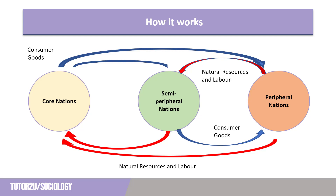So it's win-win for the core nations. Unlike dependency theory, Wallerstein suggested that the semi-peripheral nations were also able to exploit the peripheral nations — perhaps to a lesser extent — but they were able to sell consumer goods to peripheral nations and exploit cheap labour and natural resources. The main difference between Wallerstein's theory and that of Frank is that the semi-peripheral nations are both exploited and exploitative — a global middle class, some might say, with aspirations of becoming core nations, and so copying the means of achieving this by exploiting the peripheral nations.